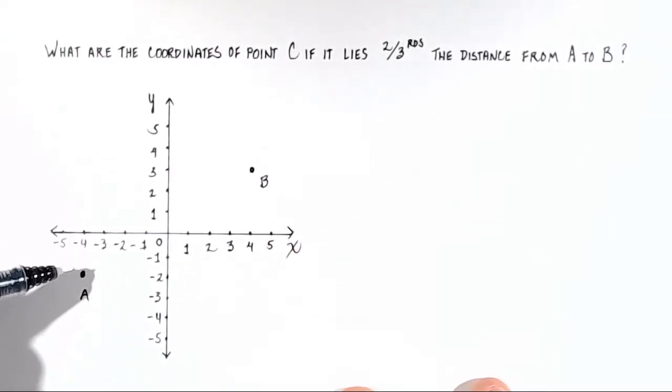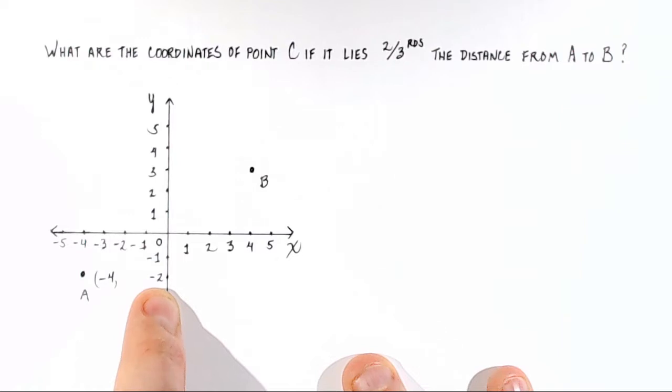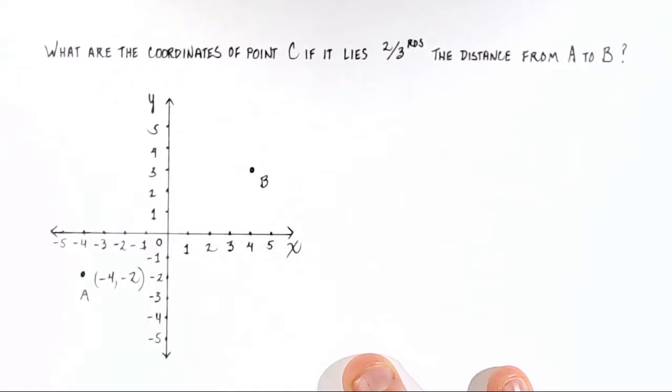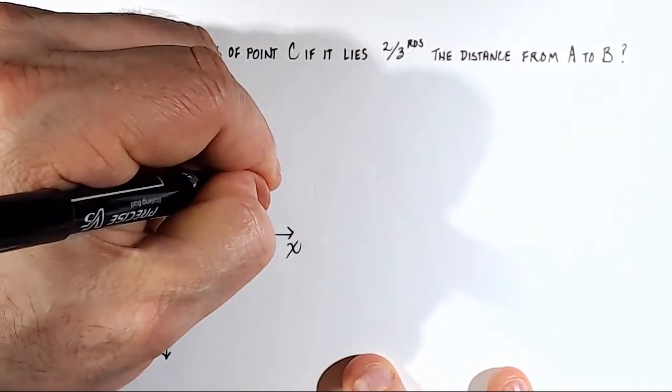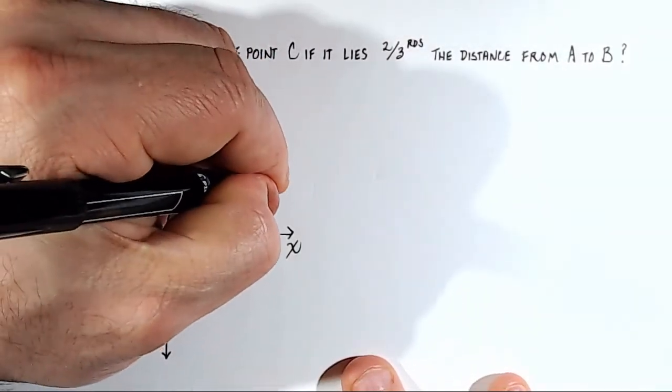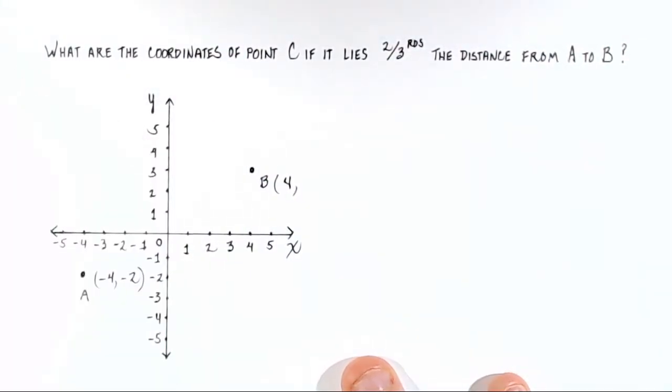So the x-coordinate of A is at negative 4. If I'm going to put some coordinate pairs in here, I'll put negative 4, comma, the y value is negative 2. Negative 2. And then what are the coordinates of B? The coordinates of B are 4, 4 on the x, comma, 3 on the y. So far so good.